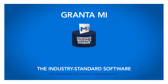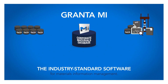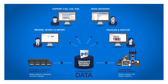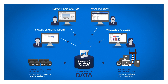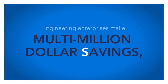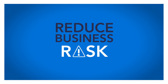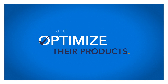Granta MI is the industry standard software for materials information management. Capture all of your company's materials data in one place, manage it so that it's accurate, secure, traceable, and share it when, where, and in the format in which it's needed. Tools help users apply this information to key decisions in materials engineering and product development. Engineering enterprises make multi-million dollar savings, cut lead times in design and development, reduce business risk and optimise their products.